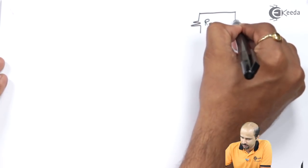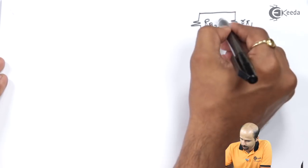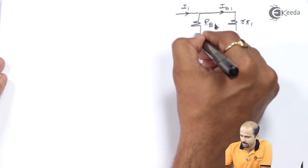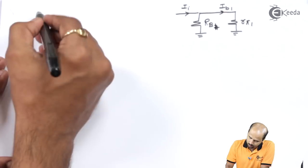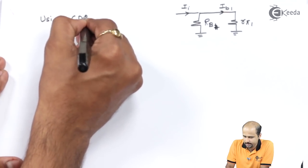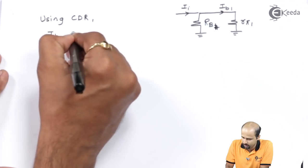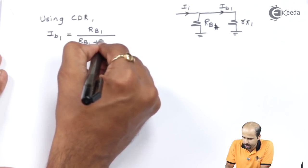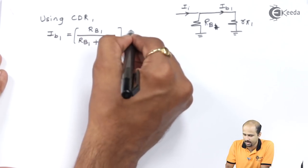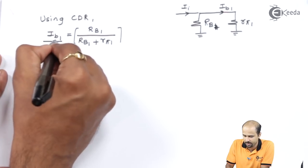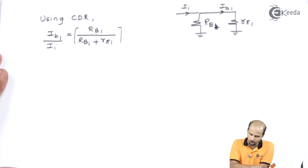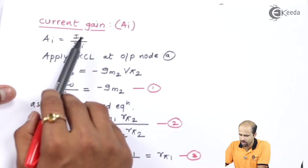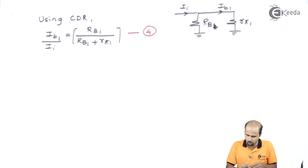At the input side, we use the current divider rule (CDR) to find ib1 from the total current ii. We have RB1 in parallel with rπ1. Applying CDR: ib1 equals RB1 divided by (RB1 + rπ1) multiplied by ii. Rearranging gives ib1/ii equals RB1/(RB1 + rπ1). This is Equation 4.